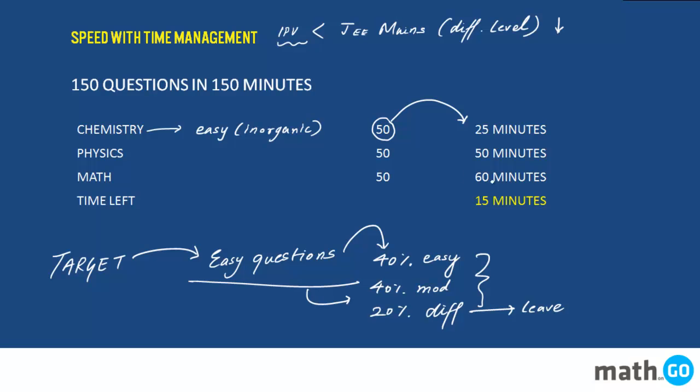You don't have time for difficult questions. Give only 25 minutes to chemistry, 50 questions. I know this is challenging, but it's possible because even physical chemistry questions will not be too calculative. Physics: 50 questions, 50 minutes straightforward, one minute per question.